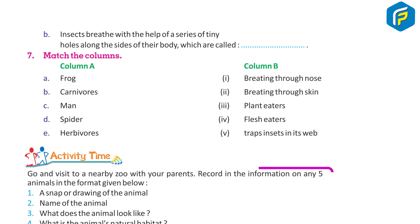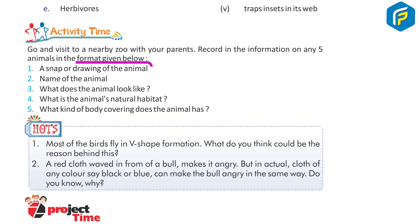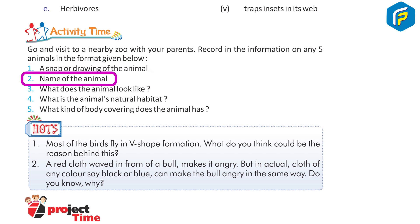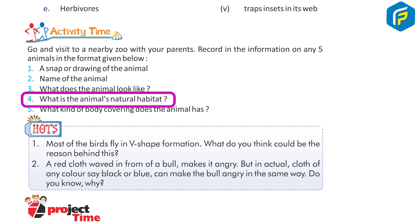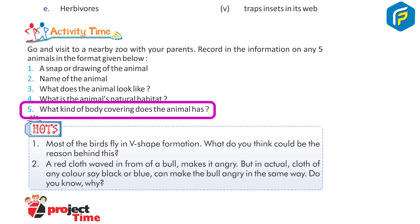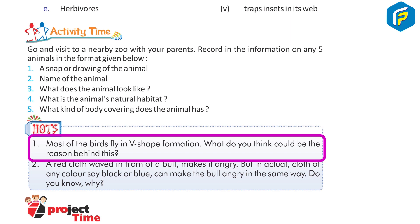Activity Time: Go and visit a nearby zoo with your parents. Record information on any five animals in the format given below: 1. A snap or drawing of the animal, 2. Name of the animal, 3. What does the animal look like? 4. What is the animal's natural habitat? 5. What kind of body covering does the animal have? Hearts: Most birds fly in V-shape formation. What do you think could be the reason behind this?